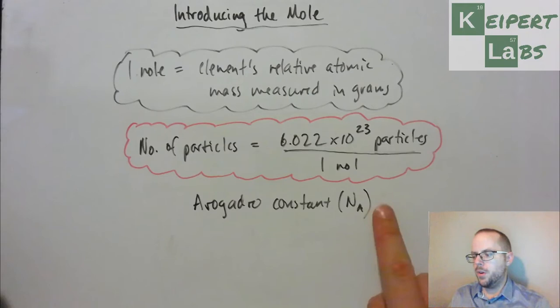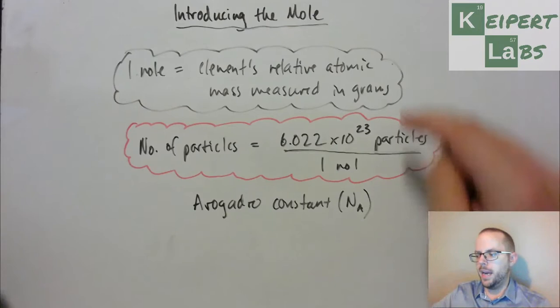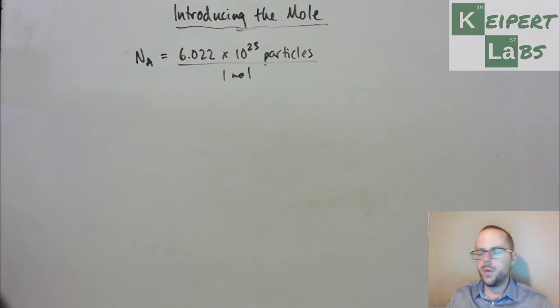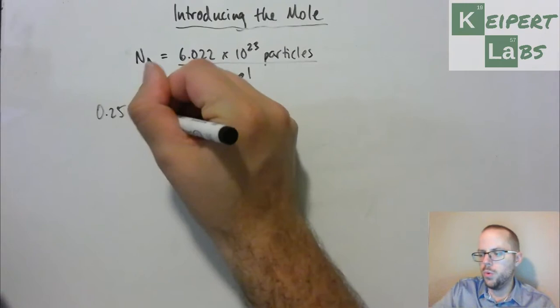But then that means that we now can say, I have a set number of particles for every one mole and I can also look at how I can measure out one mole of any substance. So, now what I'm going to do is I'm going to just do a quick practice calculation to round off this video for you to show you how we can work with this.